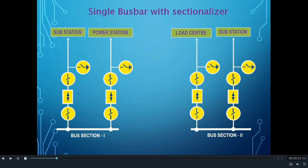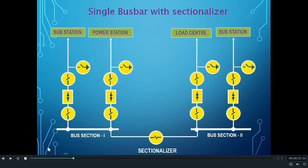In this scheme, the busbar used in a substation is only one. However, there will be two sections of the busbar — Bus Section 1 and Bus Section 2 — and these two bus sections are mutually connected through a Sectionalizer. Sectionalizers are generally provided with an Isolator and sometimes with a Circuit Breaker and Isolator on both sides.